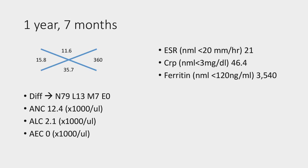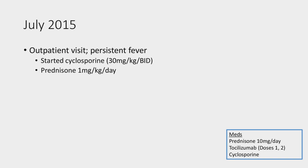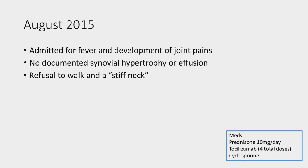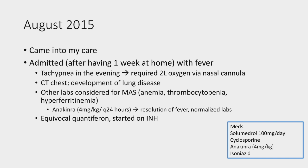The initial dosing of tocilizumab was 12 milligrams per kilogram, but she had thrombocytopenia as a side effect, so they dropped it to eight milligrams per kilogram and the platelet count rebounded. A month later, she was seen as an outpatient with persistent fever. At this point, my partner started her on cyclosporine, and her prednisone was steady at one milligram per kilogram per day. She was continuing tocilizumab with that. In August of 2015, she was admitted with fever and development of joint pains — refusal to walk and her parents said she had a stiff neck.